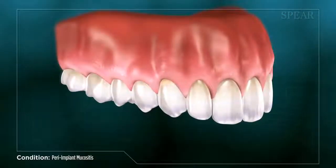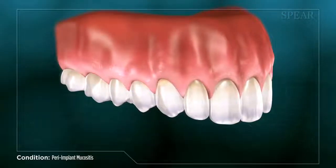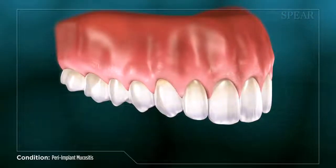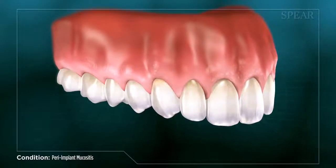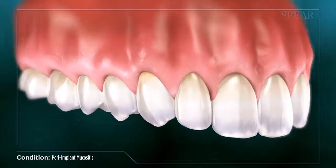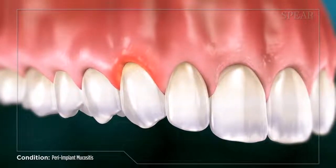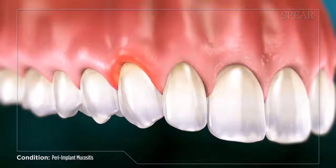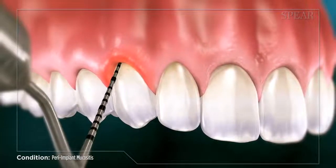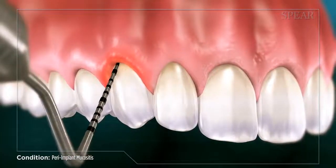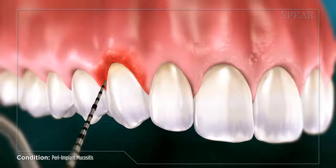Symptoms of peri-implant mucositis can vary in type and severity, and is comparable to gingivitis. Common symptoms include redness and inflammation of the gum tissue surrounding the implant, and in some cases, the area may experience tenderness and slight bleeding when being probed or while brushing.